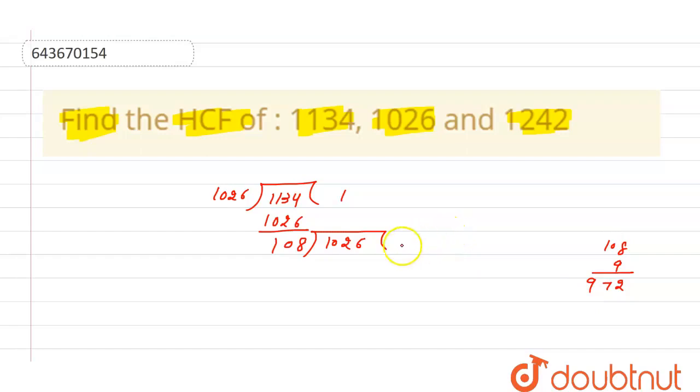So here we get 4 and here we will get 12 minus 7 is 5. Now we will divide 108 by 54. So if we multiply it by 2, we will get 108.